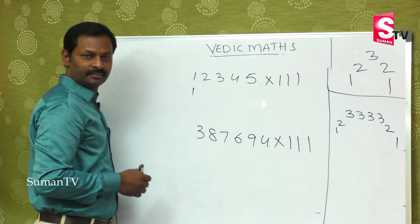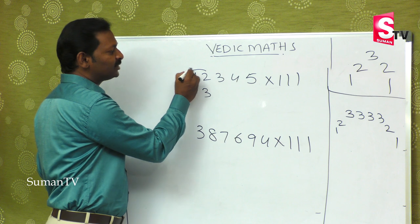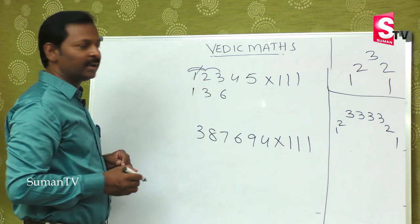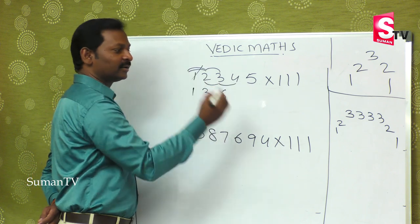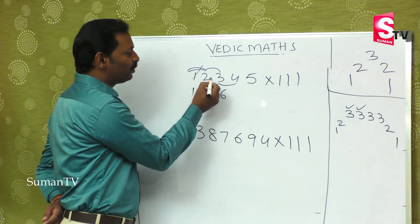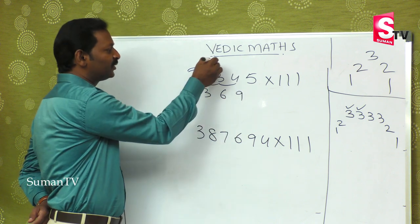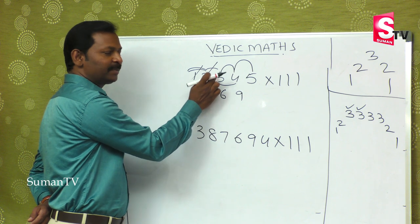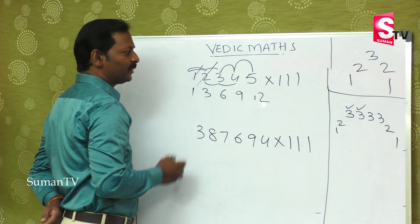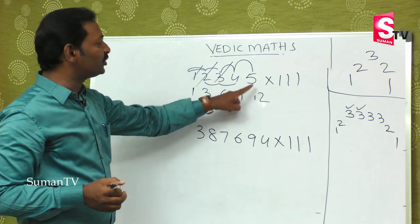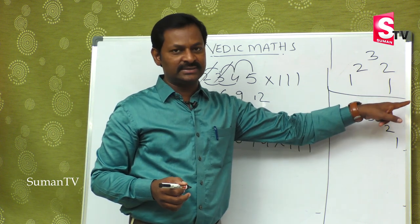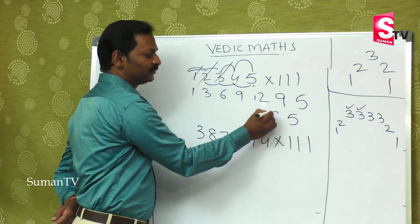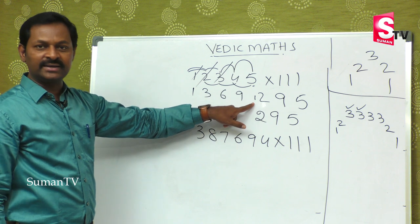First digit is 1. Then 1 plus 2 is 3. Then 1 plus 2 plus 3 is 6. If you have 3 numbers, you can close the first digit or cancel it. So 2 plus 3 is 5, 5 plus 4 is 9. Next: 3 plus 4 plus 5 — 3 plus 4 is 7, 7 plus 5 is 12. That gives 9, and finally 5. So the final answer is 5, 9, 2...